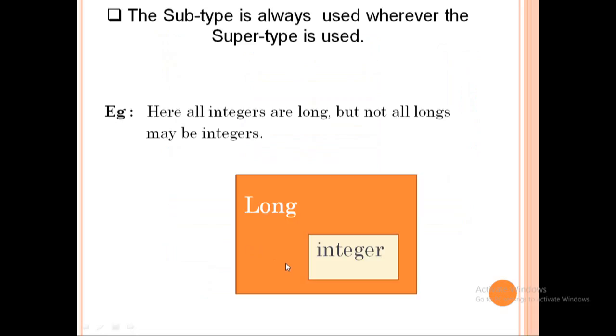The subtype is always used wherever the supertype is used. Here all integers are long, but not all longs may be integers.